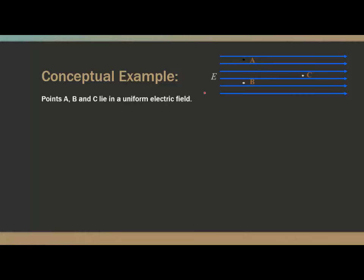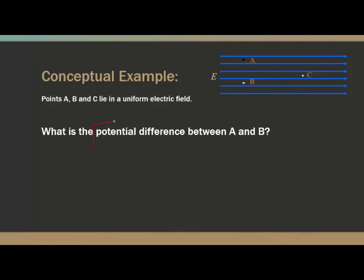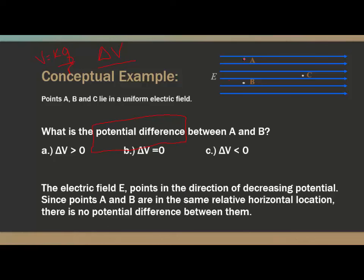Let's look at a conceptual example. We have an electric field — blue lines labeled E pointing to the right — and three points A, B, and C. What is the potential difference between A and B? A and B are at the same relative horizontal location in the electric field, essentially the same distance R from whatever is creating it. Since they are exactly the same distance away, they have exactly the same electric potential, so the potential difference is zero.